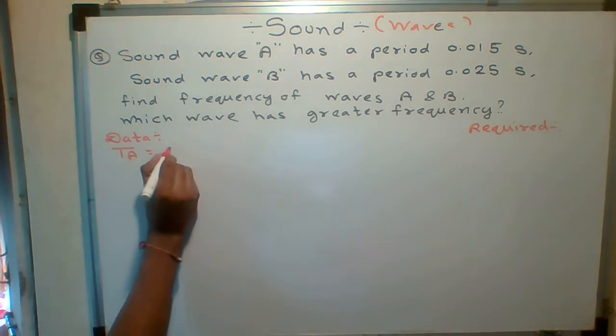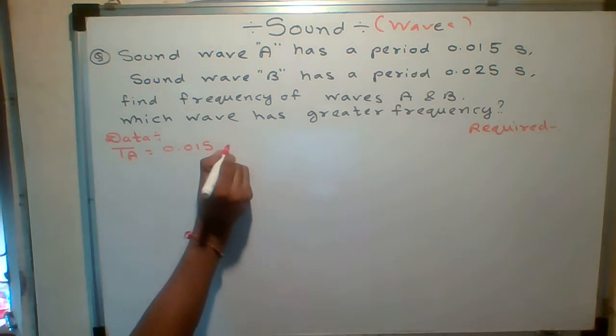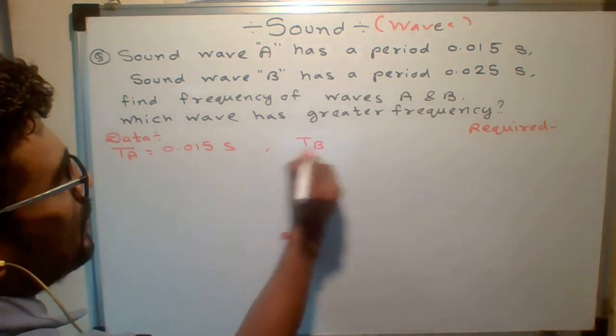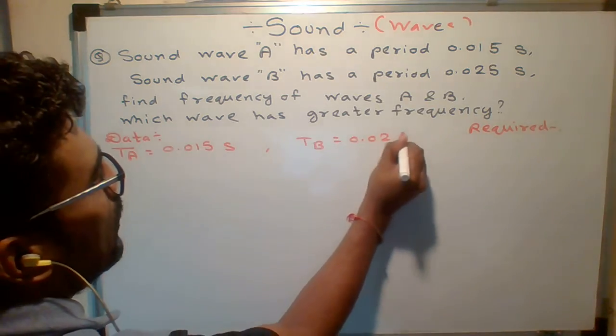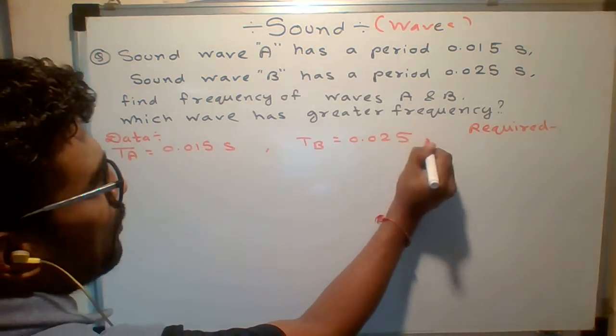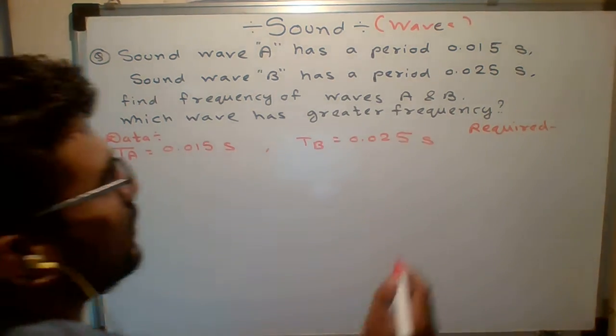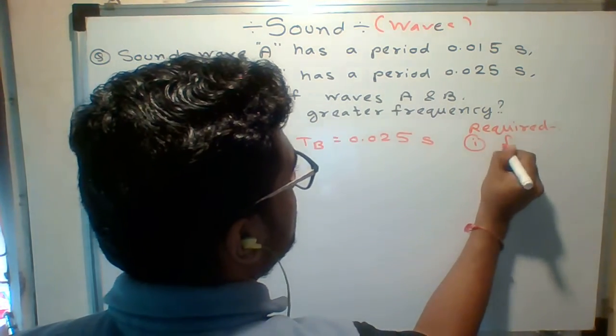Period of wave A is given: 0.015 seconds. And period of wave B is also given, how much? 0.025 seconds. And what we need? We need to find out the frequency of wave A and frequency of wave B.